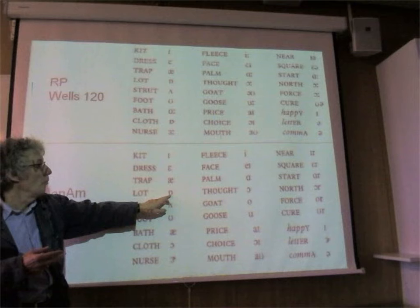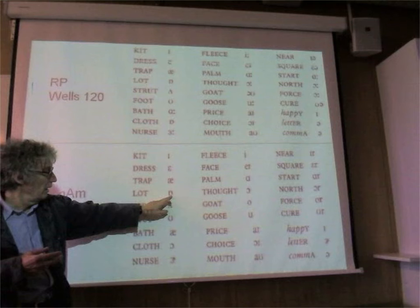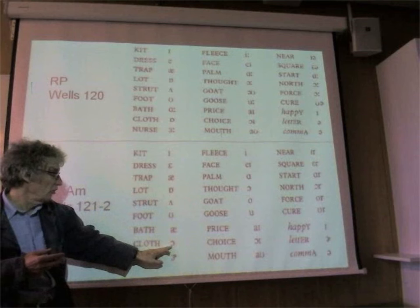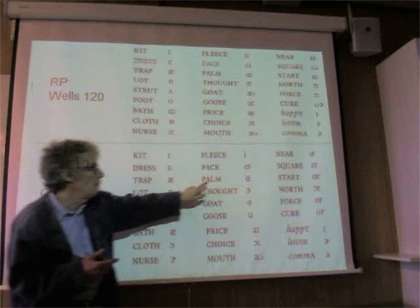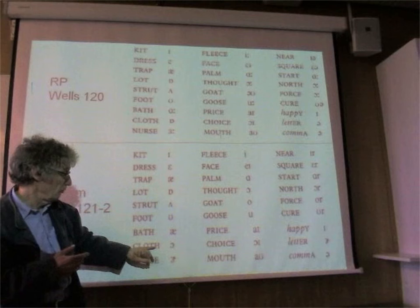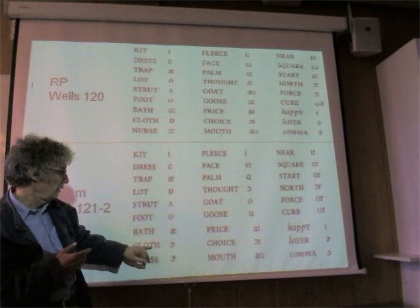But if you look at American, you've got the lot set which has not A but it should be more like A here - lot. He's got cloth. Lot and cloth - Americans have two positions here. Usually lot is the same as palm; lot and palm have fallen together, but cloth may be different. Sometimes cloth is the same as lot. It's quite complicated in American.